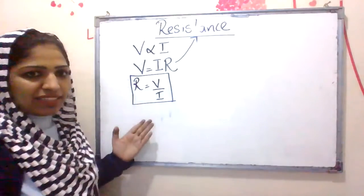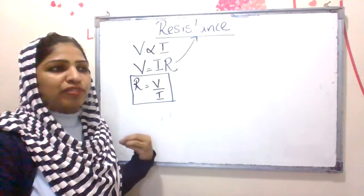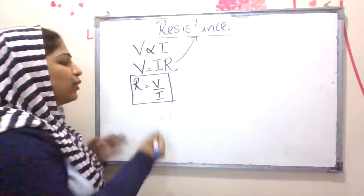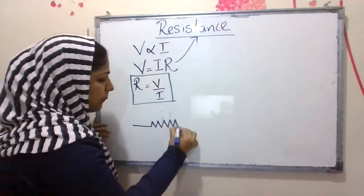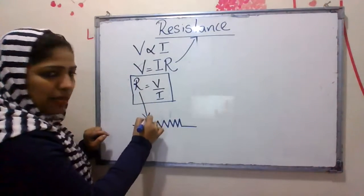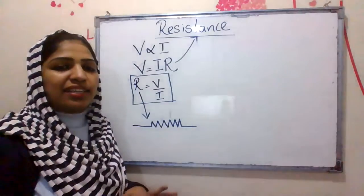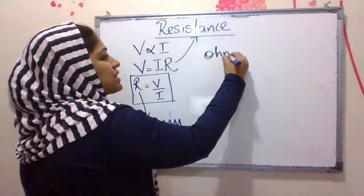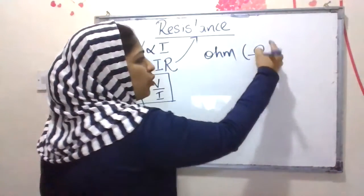Resistance is the ratio of potential difference to current. It is the amount of opposition offered by a metallic conductor. The formula is V by I. Resistance is a physical quantity. The SI unit of resistance is the ohm. The symbol of ohm is the Greek alphabet omega.